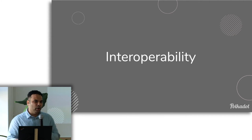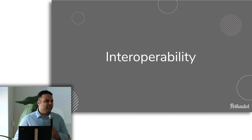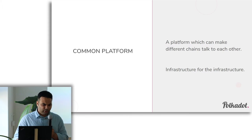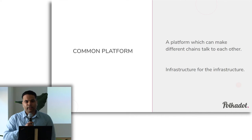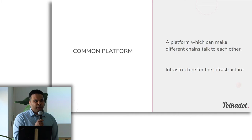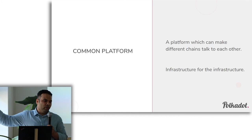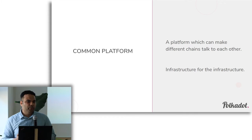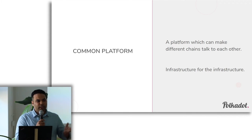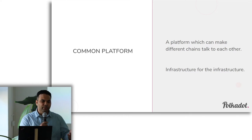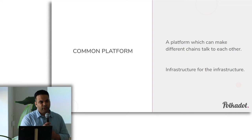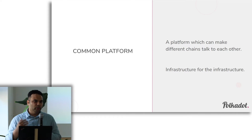Before we go into how Polkadot solves that problem, let's look at what exactly is needed to solve interoperability. The first thing is a common platform. Until chains or networks or systems are not able to talk to each other in a standardized way, they will not talk to each other. If I can communicate to you in English and you're listening — if I was speaking Hindi, most of you wouldn't follow. Systems need a common platform first. We need infrastructure for the infrastructure itself.